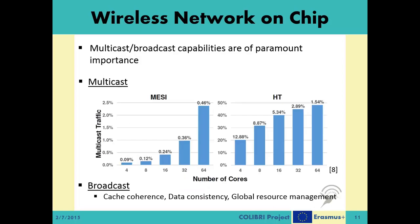A critical advantage of wireless systems over wired ones is the inherent multicast and broadcast capabilities, which are of paramount importance for wireless network-on-chip applications. For multicast, it is shown by Abadal et al. that the amount of ejected packets consistently increases due to multiple replication of each multicast message within a wireless network-on-chip. The percentage of ejected flits due to multicast transactions grows above 2% in the MESI system and almost reaches 50% in another system called HT. This further encourages the employment of shared medium network-on-chips to efficiently serve multicast traffic. Broadcasting is also a vital part of on-chip traffic due to issues like cache coherence, data consistency, and global resource management.